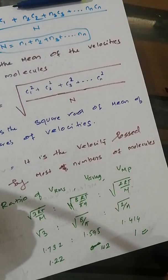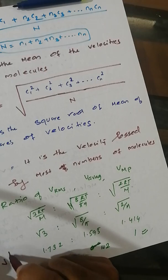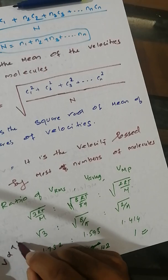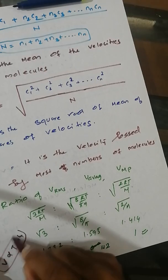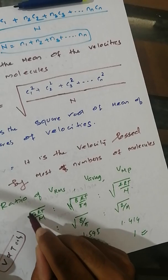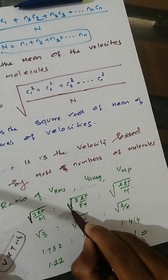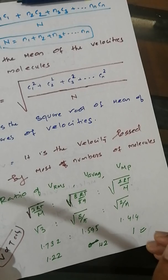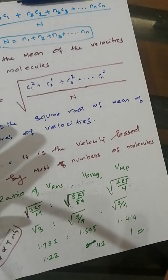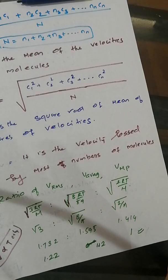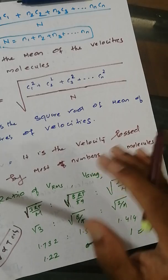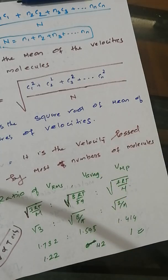Looking at these equations, velocity is directly proportional to temperature only. Whatever the velocity — whether it is RMS, average, or most probable — any velocity depends upon temperature only. You should solve some questions from your material and make notes. Thank you for watching.